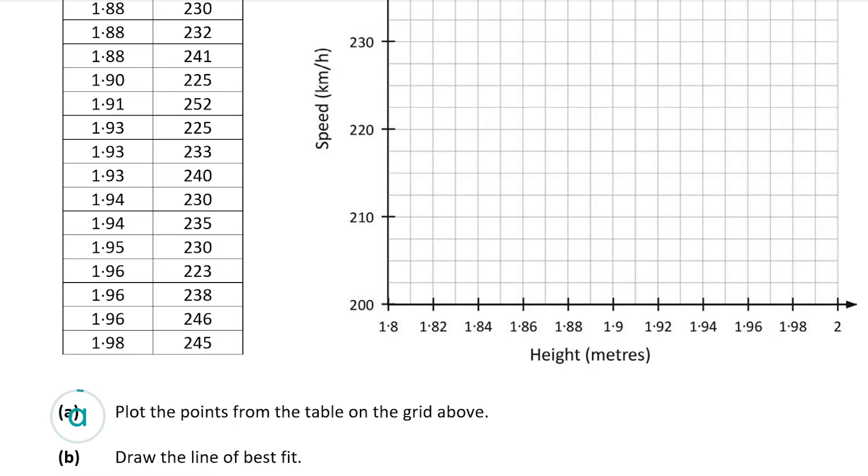Parts A and B are worth a combined 10 marks. Part A wants us to plot the points from the table and part B wants us to draw in the line of best fit. Putting the points from the table on the grid should be easy enough, and then drawing in the line of best fit is just drawing in a line that has roughly half the points on one side and the other half on the other side.